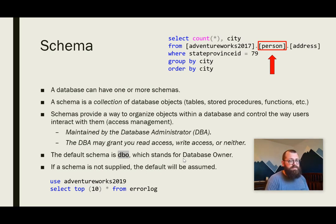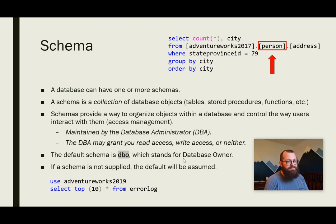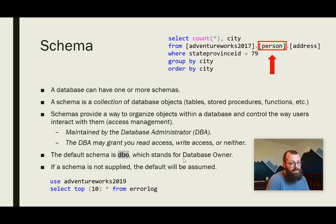The default schema is the DBO schema, which stands for database owner. It's used to varying degrees depending on the environment. In the AdventureWorks database, they treat it as a true DBO schema — reserved for database management functions, not actually storing data. In the real world, you might encounter environments where all your tables are on the default DBO schema. If a schema isn't supplied, the default DBO will be assumed — SQL will assume you're referring to the DBO schema when you don't explicitly provide one.